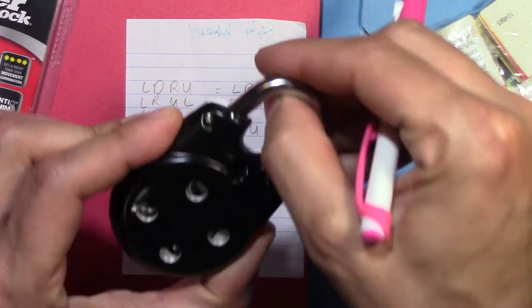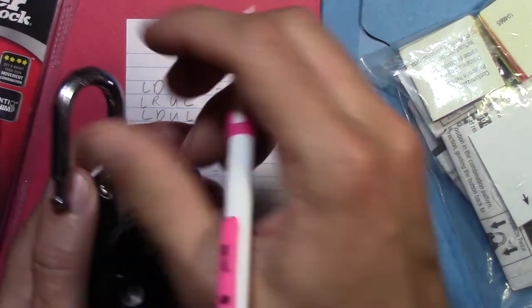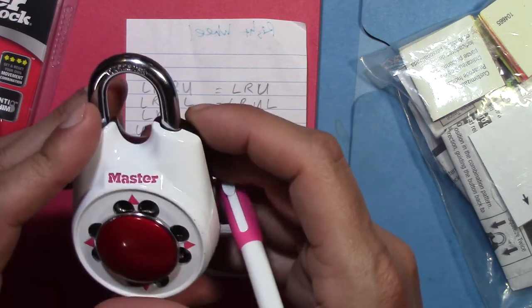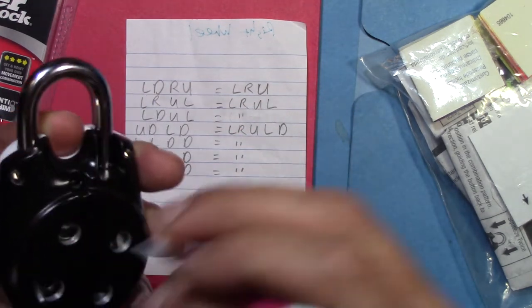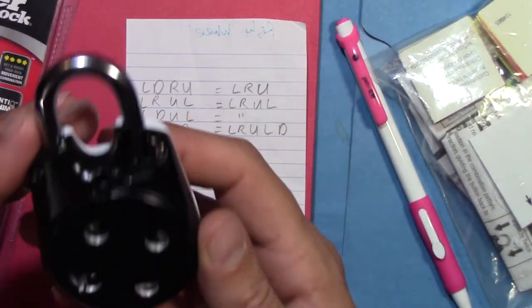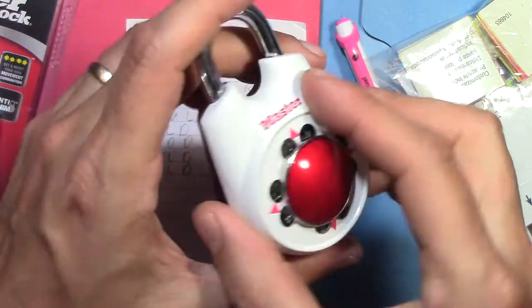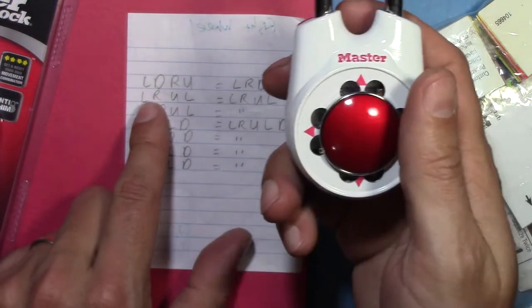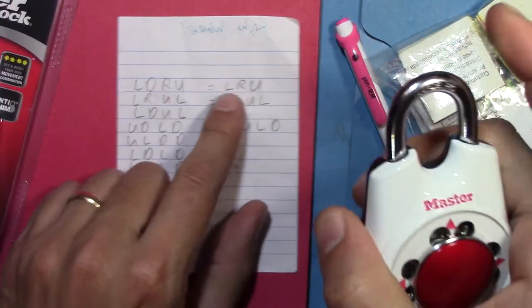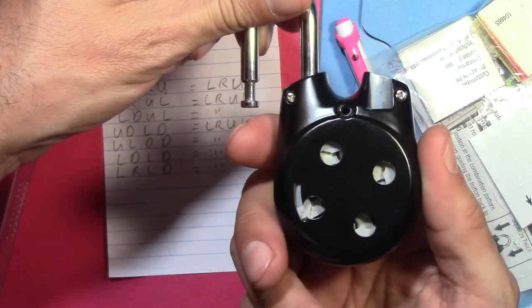Don't believe me? Let's set this lock to left down right up. Left down right up. Gauge the wheels. Reset it. Okay let's look at the back. Left down right up. Okay it opens. Well let's try left right up. Left right up works just as well.